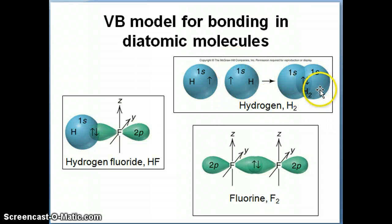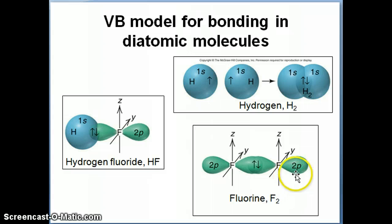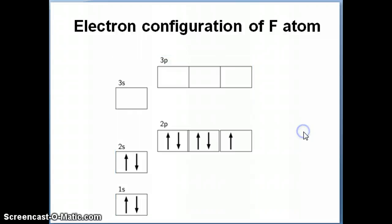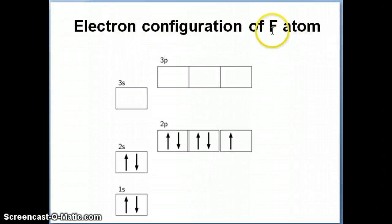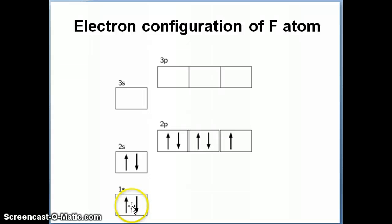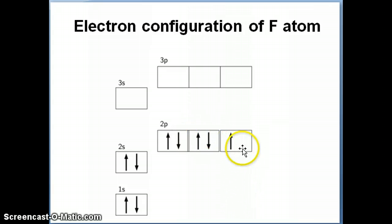H2, of course, is the one we just talked about, but you can also imagine the molecule F2, fluorine. In order to understand why F2 looks the way it did in the previous slide, let's talk first about the electron configuration of the F atom. F has nine electrons, which means its electron configuration will be 1s2, 2s2, and 2p5.